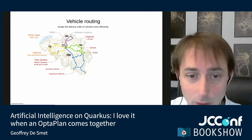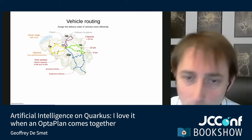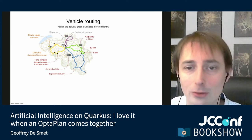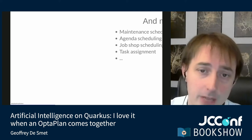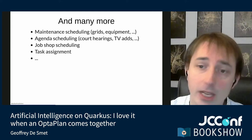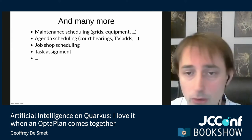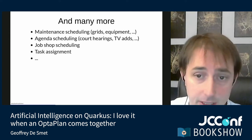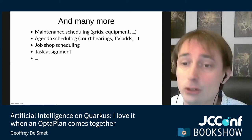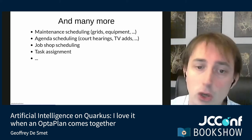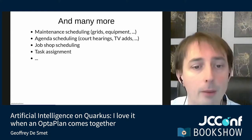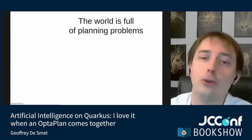That also reduced CO2 emissions by more than 10 million kilograms. It's a big win-win. Vehicle routing is therefore one of the most profitable. But there's many more: maintenance scheduling for electricity city grids, railroads, elevators, airplanes; agenda scheduling for court hearings; scheduling TV ads; job shop scheduling to optimize assembly lines in factories; task assignments. The world is full of planning problems.